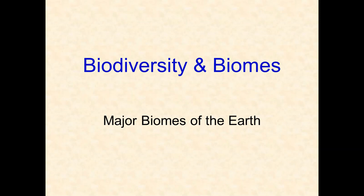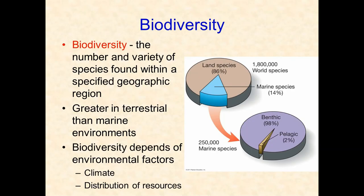Biodiversity and biomes. We are going to see how the variety of life varies from location to location depending on several factors. Let's begin and talk about what biodiversity is. Biodiversity is defined as the number and variety of species living together in a particular ecosystem. Biodiversity is much greater in terrestrial or land environments than in marine — 86% of all known species live in terrestrial biomes, while only 14% live in the oceans.